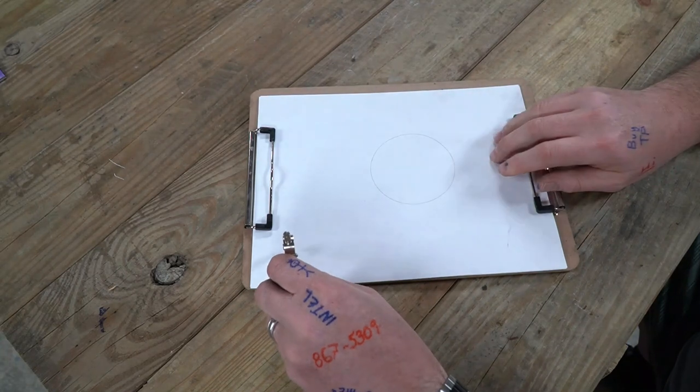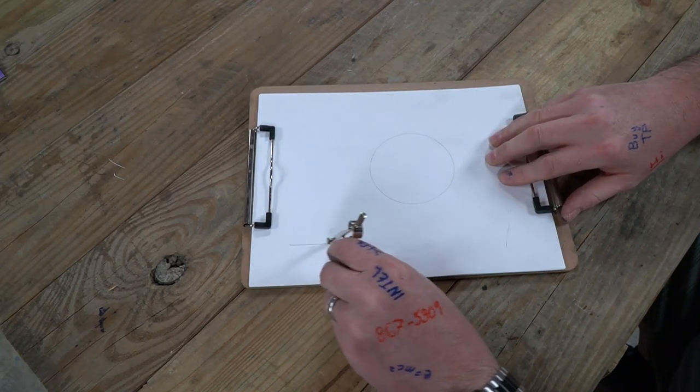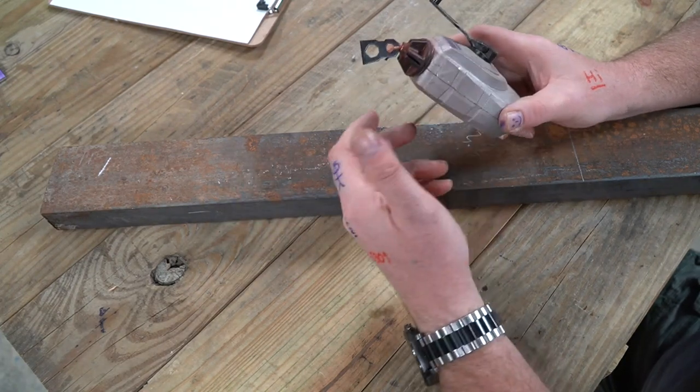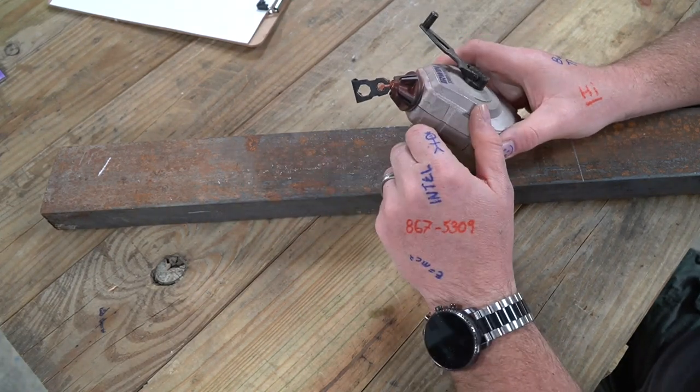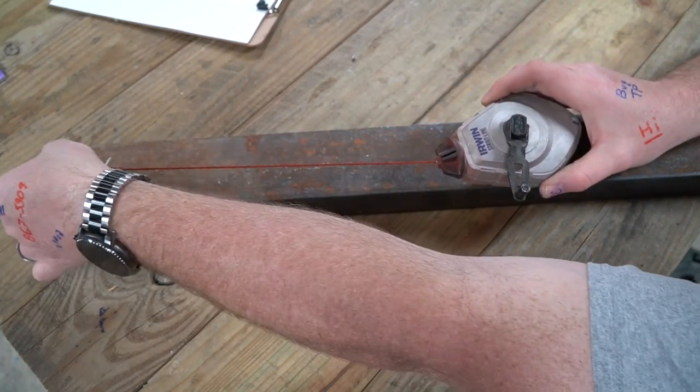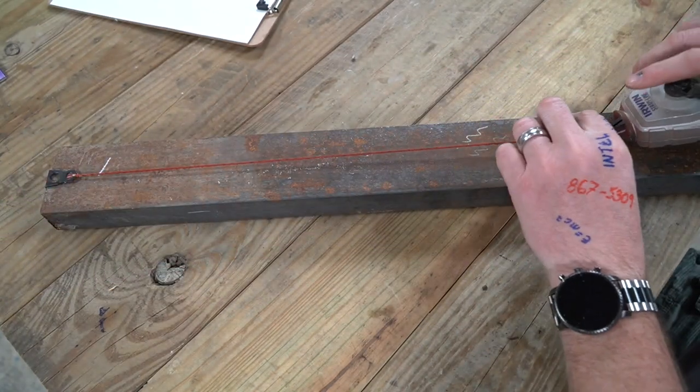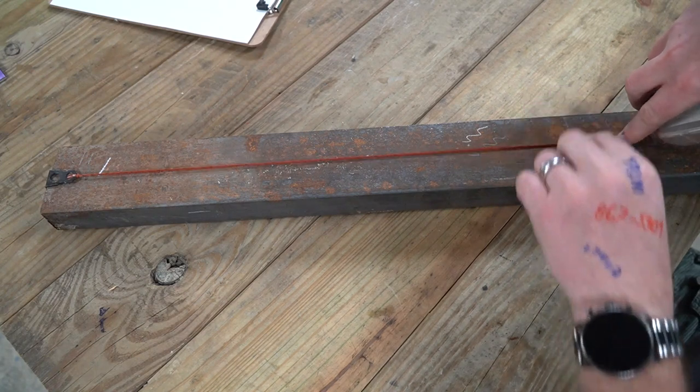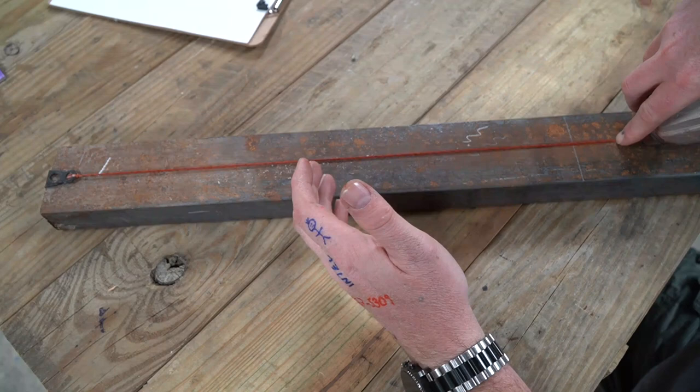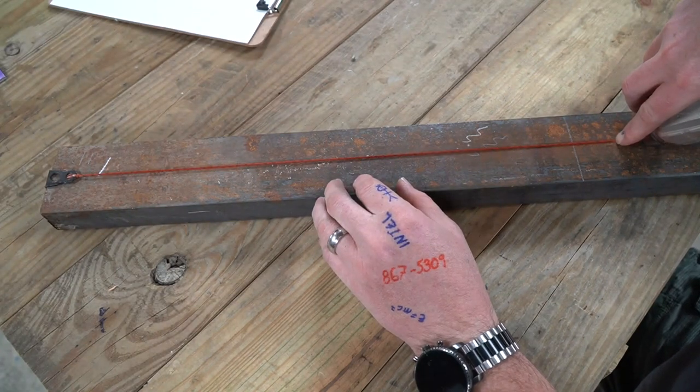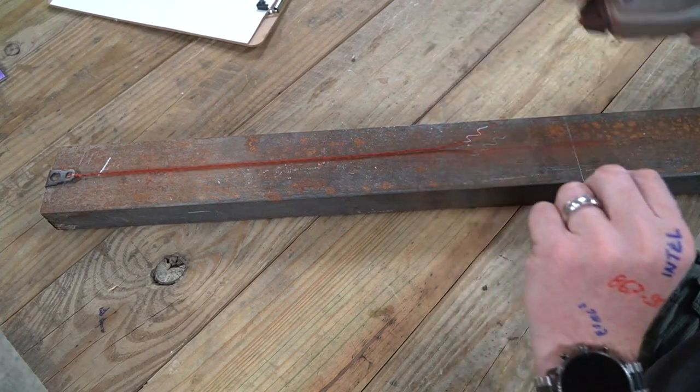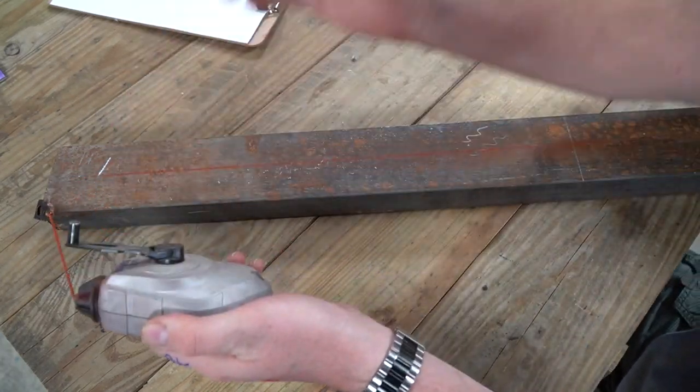Never underestimate a chalk line. I know a lot of people think chalk lines are strictly for carpentry, but I use them for all kinds of things. If you want a straight line, it's really hard to beat a chalk line. Something else that a lot of people don't know is you can buy different types of chalk. You can buy a permanent chalk which doesn't clean off very well, you can buy your standard chalk which does, but if you need a straight line, a chalk line is really handy.